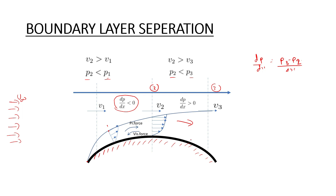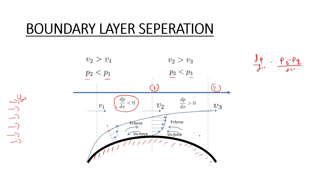Pressure force is also opposing the flow. We would have pressure force and viscous force both opposing. So let us see the velocity — the pressure force and viscous force are opposing.